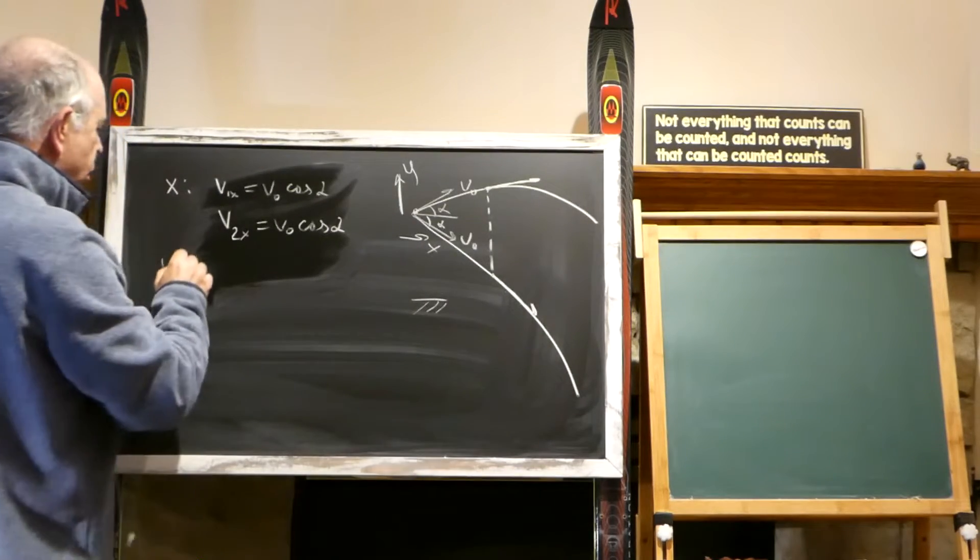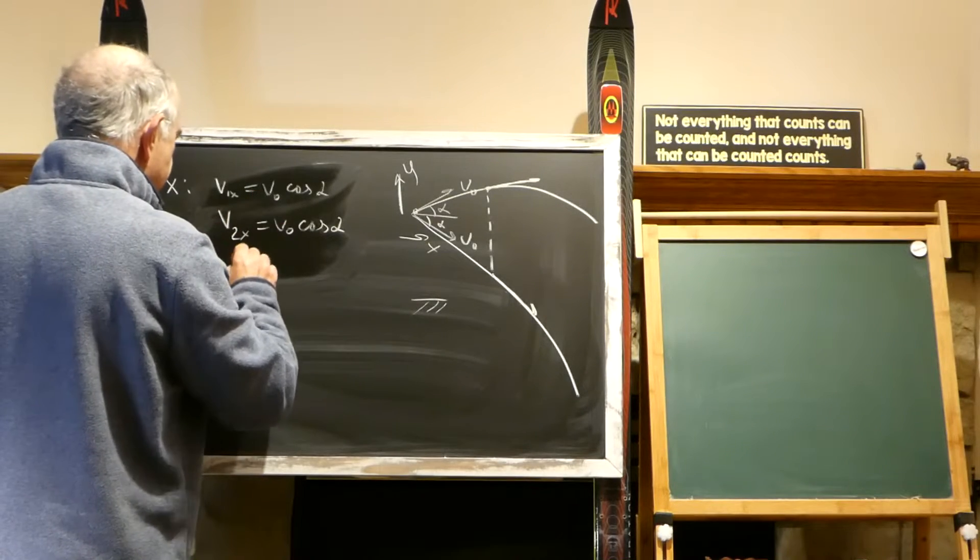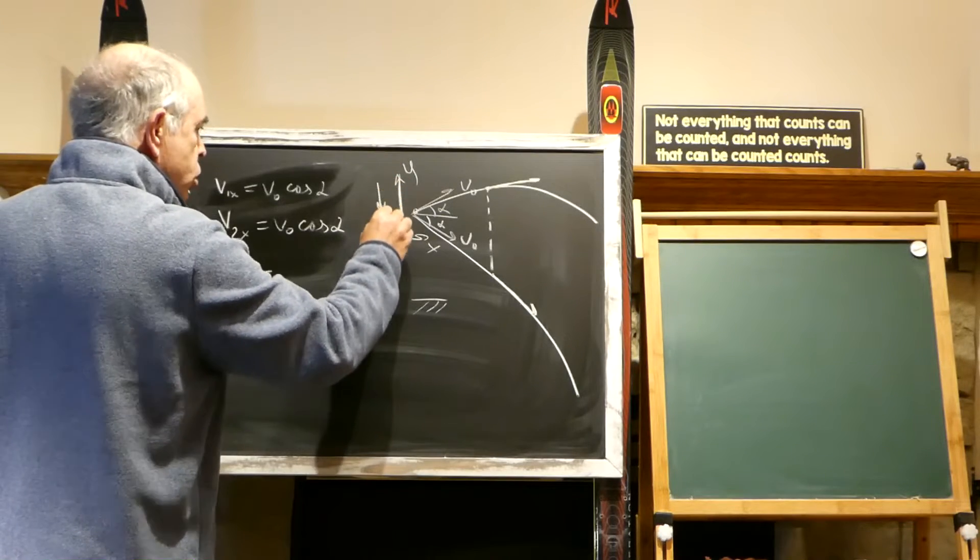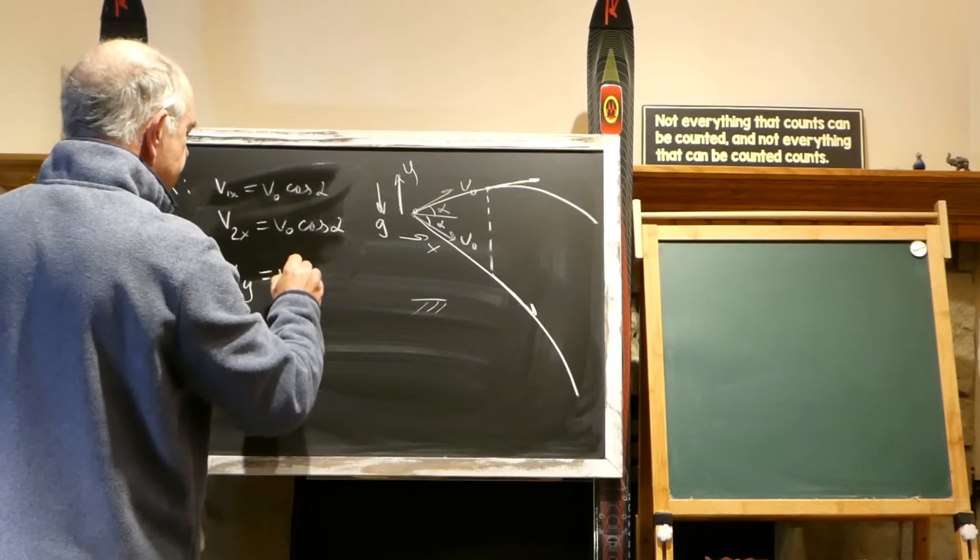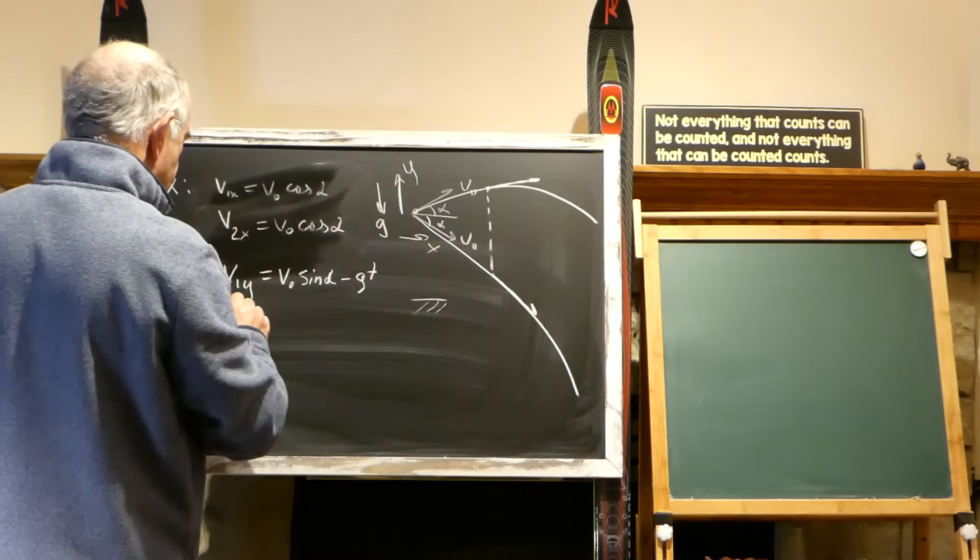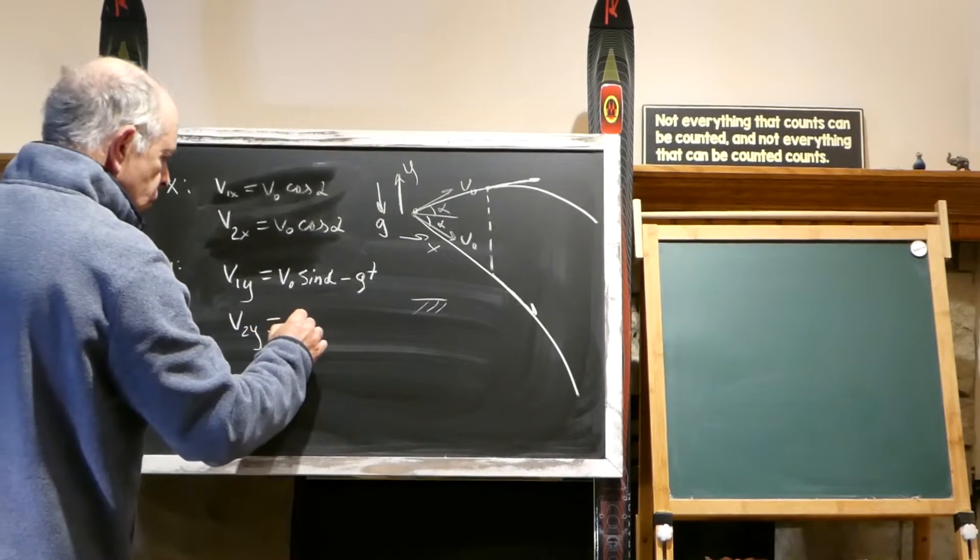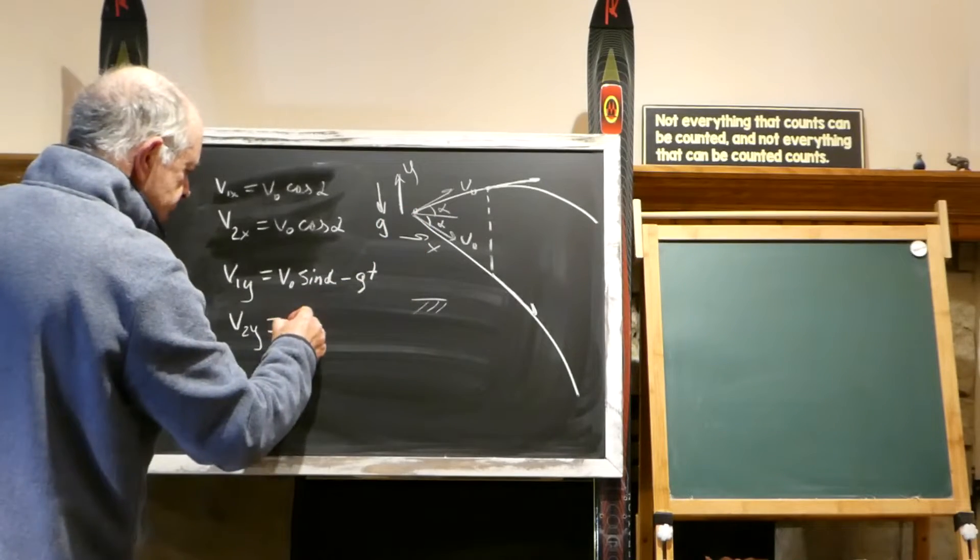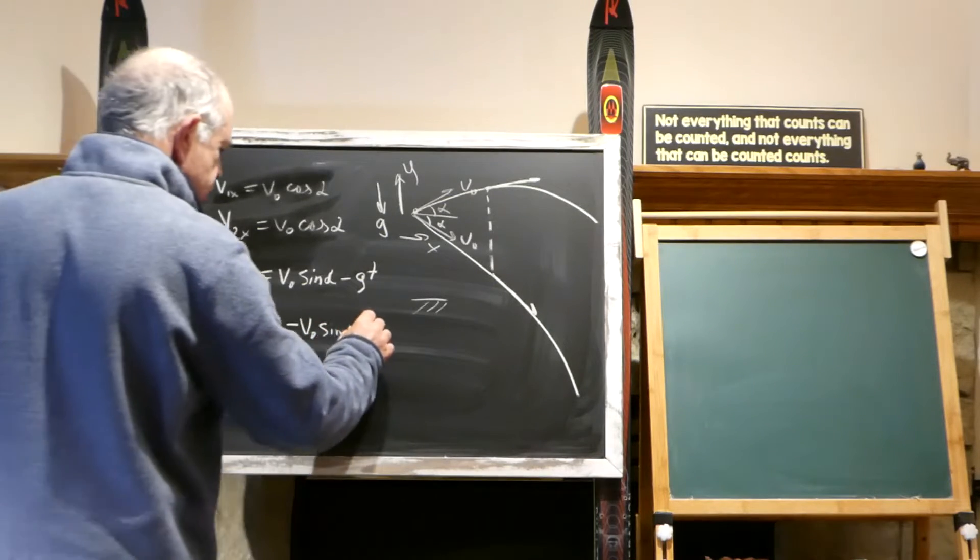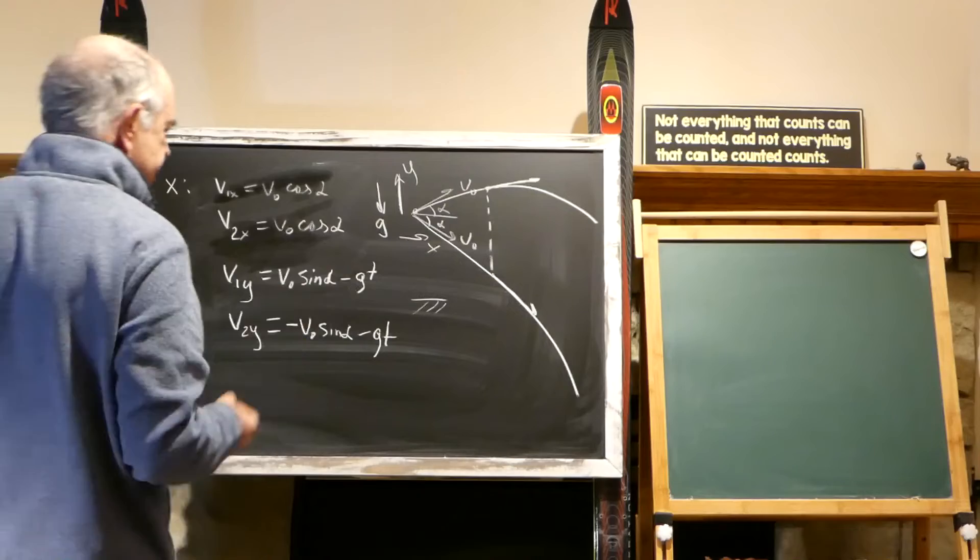And so we go along y and we have that at any point in time, v1y equals, this is the movement against g, so it would be v0 sine alpha, initial speed, minus gt. And with the second body, it would be v2y equals minus v0 sine alpha and minus gt. Minus because it's going down, those both minuses against this direction.